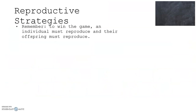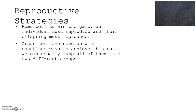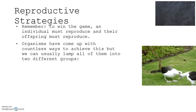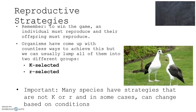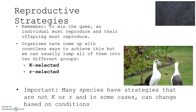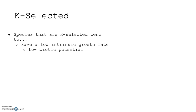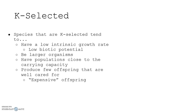Let's look at some reproductive strategies. To win the game, an individual must reproduce and their offspring must reproduce. Organisms have come up with countless ways to achieve this, but we can usually lump all of them into two different groups: K-selected and R-selected. It's important to know that many species have strategies that are not strictly K or R, and in some cases they can change based on conditions. K-selected species tend to have low intrinsic growth rates and low biotic potential. They tend to be larger organisms that grow slowly, produce a few offspring that are well cared for, invest a lot of energy into raising their young, and reach sexual maturity later in life.